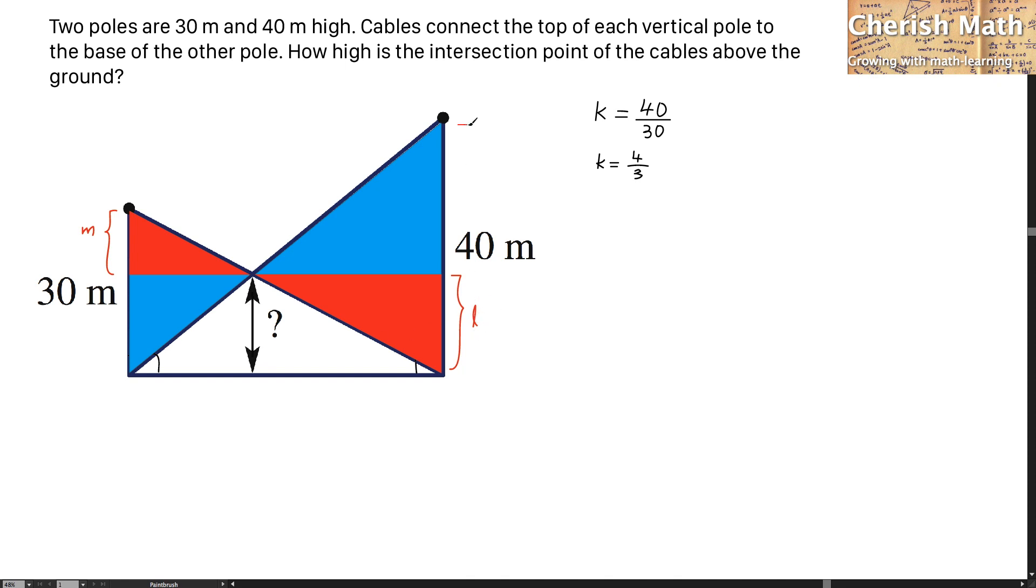So for this part the answer of the height would be 40 minus L. While for here the height of this would be 30 minus M. I'm going to use the concept of similarity to solve the problem.